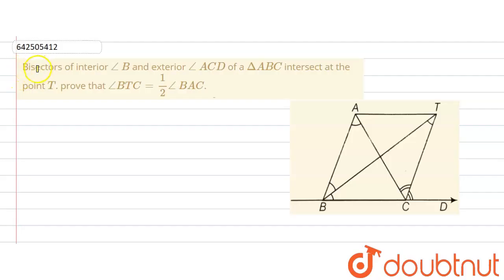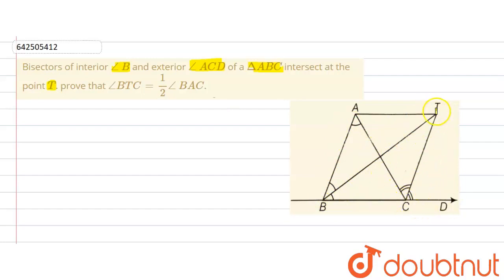The given question says that bisectors of interior angle B and exterior angle ACD of a triangle ABC intersect at the point T. The bisector of angle ABC, that is BT, and the bisector of exterior angle ACD, that is CT, are intersecting each other at point T. We are required to prove that angle BTC is equal to half of angle BAC.